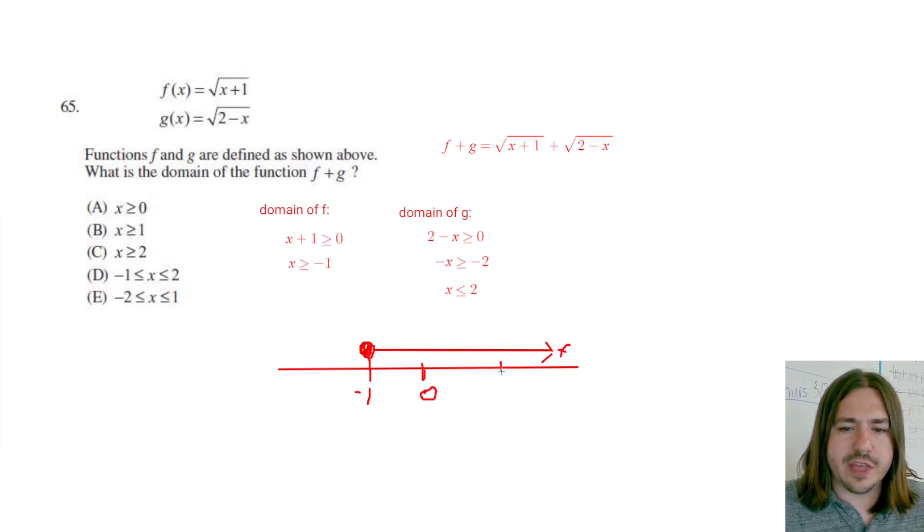G says that x has to be less than or equal to 2. So g's could be 2, right? And then that'd just be the square root of 0, and that's real. And any number smaller than 2 will also work.